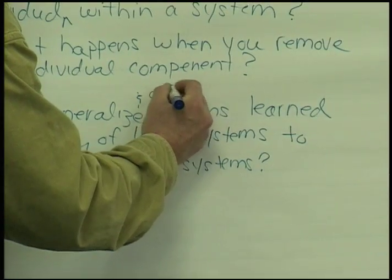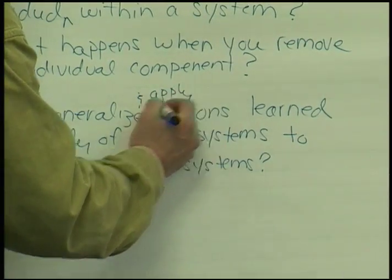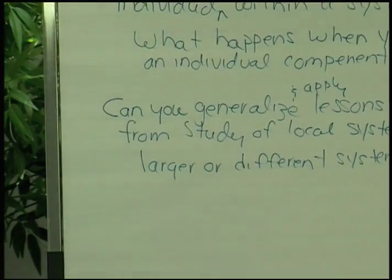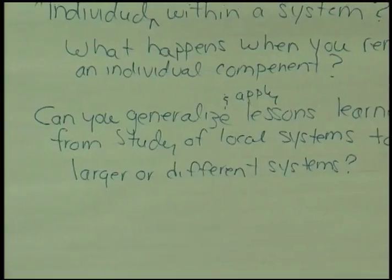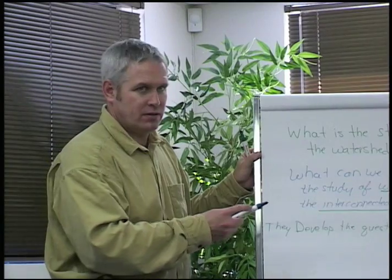Can you take lessons learned at a local scale and apply them to larger scale issues? I want something in there about components of systems and variables — they're going to be looking at a watershed that works right, and then things that are introduced into a watershed that upset that. If you change one thing, does it fall apart or not? Or if you change one thing by adding something else, could things fall apart or not?